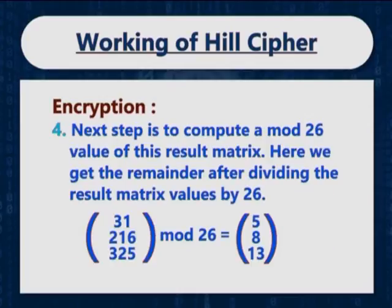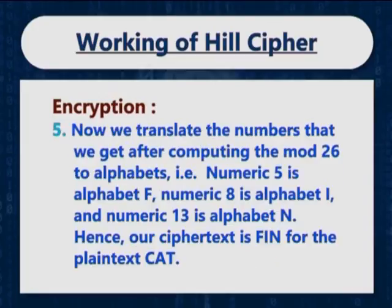The next step is to compute a mod 26 value of this result matrix. Here we get the remainder after dividing the result matrix values by 26, and after computing the mod 26 of the result matrix, we get 5, 8 and 13. Now we translate the numbers to alphabets: numeric 5 is alphabet F, numeric 8 is alphabet I, and numeric 13 is alphabet N. Hence, our cipher text is F, I, N for the plain text C, A, T.